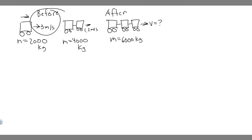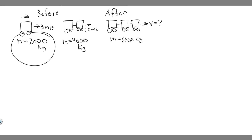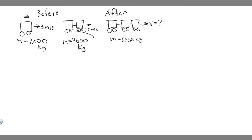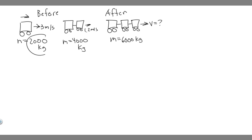So this is what's going on before and this is what's going on after. We have this car moving at 3 meters per second. Its mass is 2,000 kilograms. Then it's going to collide with these two cars. They have a combined mass of 4,000 kilograms, because they're the same as the one car but there's two of them. And these are moving at 1.2 meters per second.